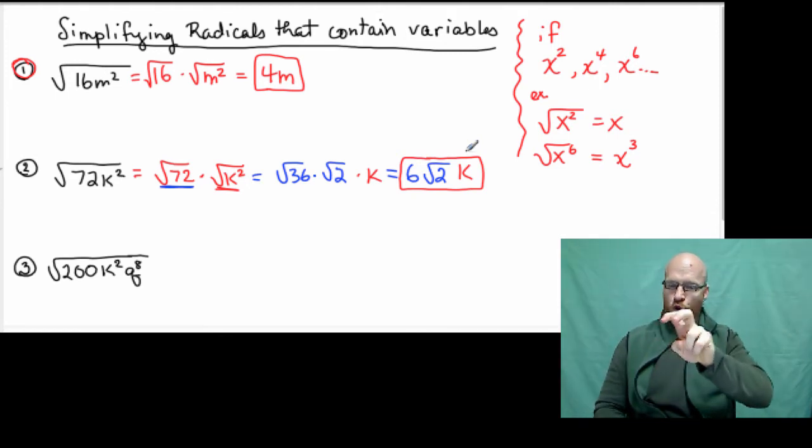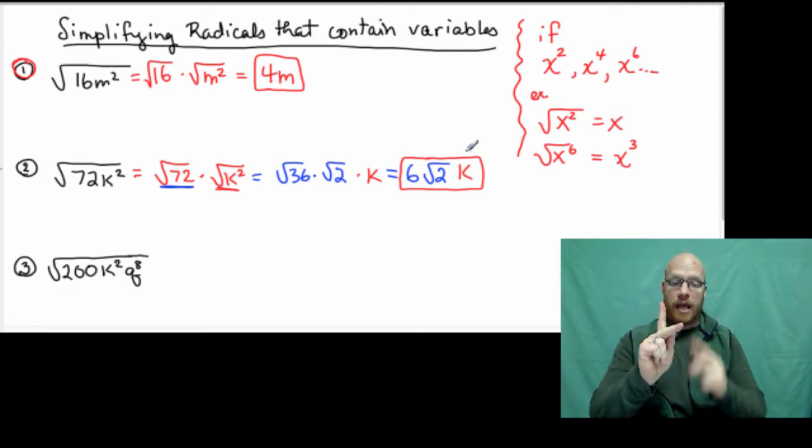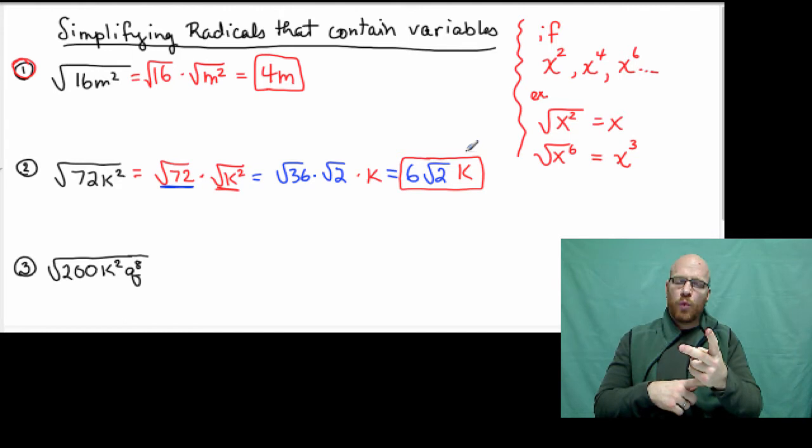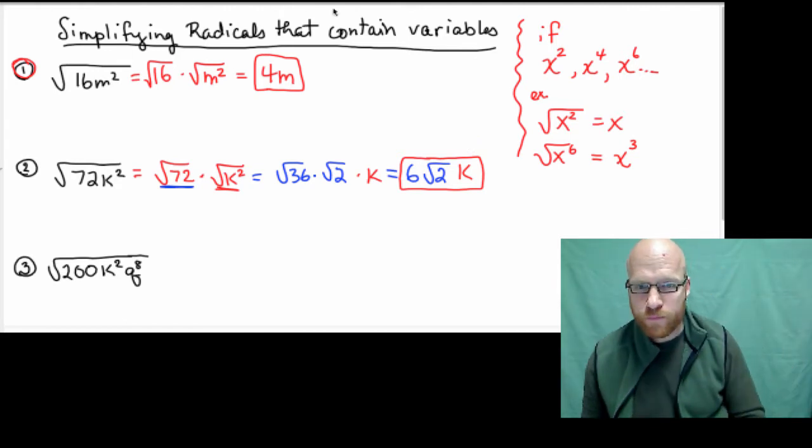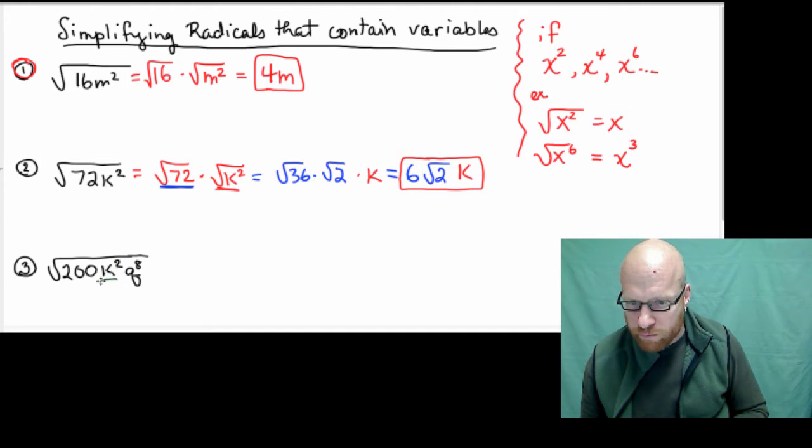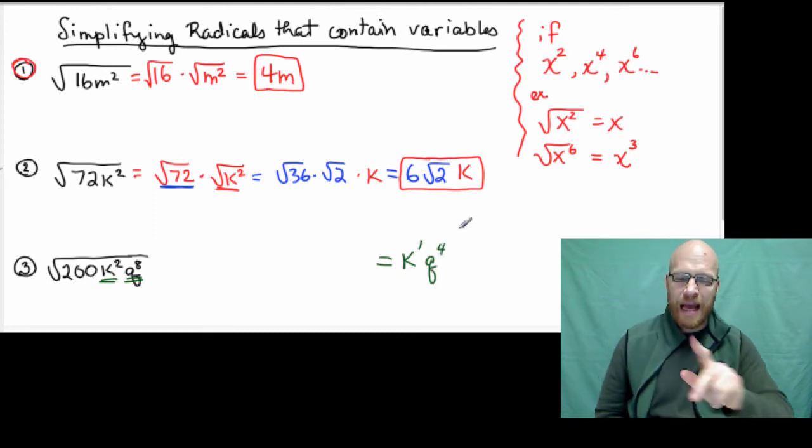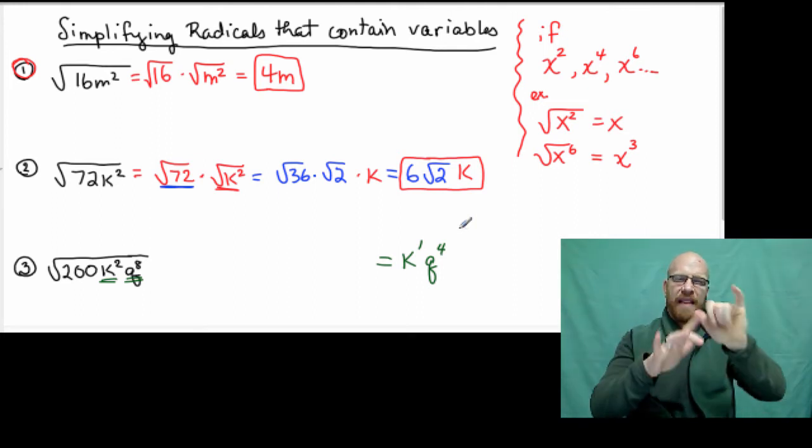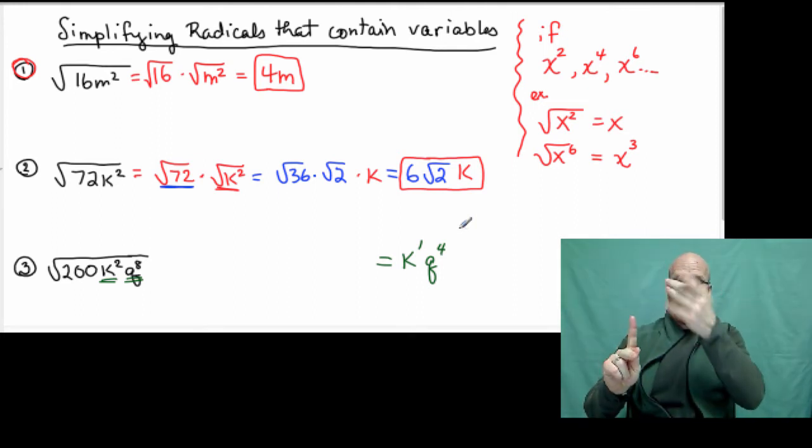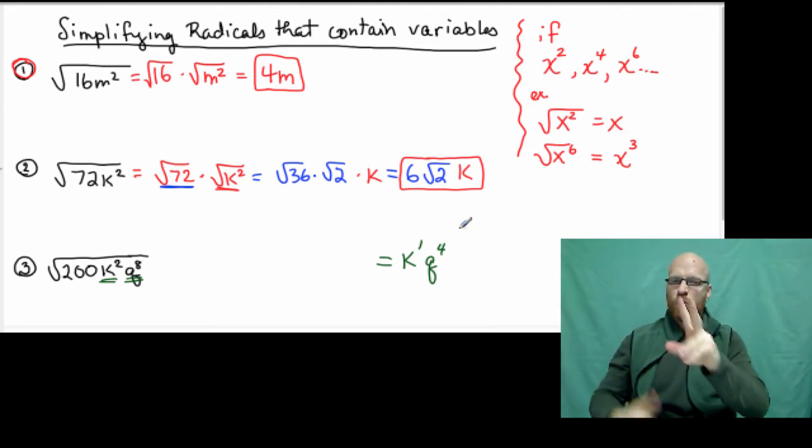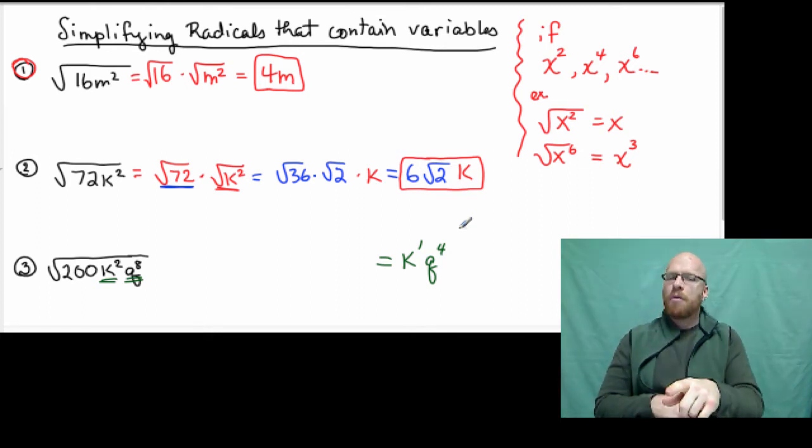Look at our third example now. 200k squared, q to the 8th power. k squared and q to the 8th power are both even powers, so they both have perfect squares. Divide the power by 2 and that's your square root. Really you don't have to write k to the first power, but I'm doing that for illustrative purposes. So q to the 8th, divide 8 by 2, it's 4. And k squared, 2 divided by 2 is 1.